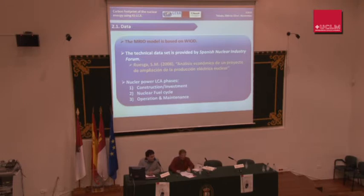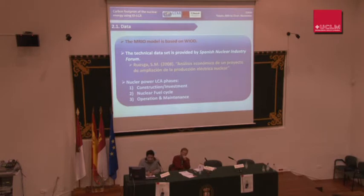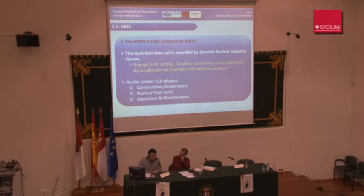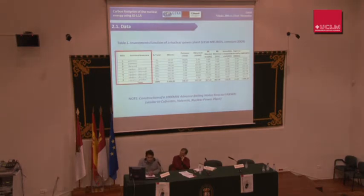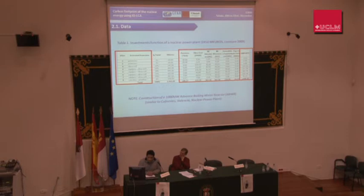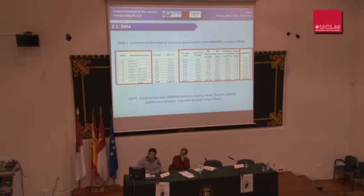This is a very interesting report. We are going to establish a differentiation for the life cycle phases between construction and investment of the nuclear facility, the nuclear fuel cycle, and operation and maintenance. We don't have data about the dismantling process, so we may be underestimating the total emissions in our carbon footprint analysis. Table 1 and Table 2 show the information we are going to use to build our vectors of final demand. The main advantage of this information is that we have data disaggregated by sectors, since the total investment costs are less important than an accurate sector-level disaggregation.